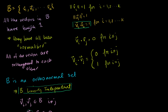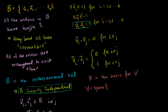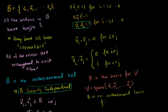So this orthonormal set is also a set of linearly independent vectors, which means it can be a basis for a subspace. If B is the basis for subspace V, or V equals the span of v1, v2, all the way to vk, then we call B not just an orthonormal set but an orthonormal basis. B is an orthonormal basis for V.